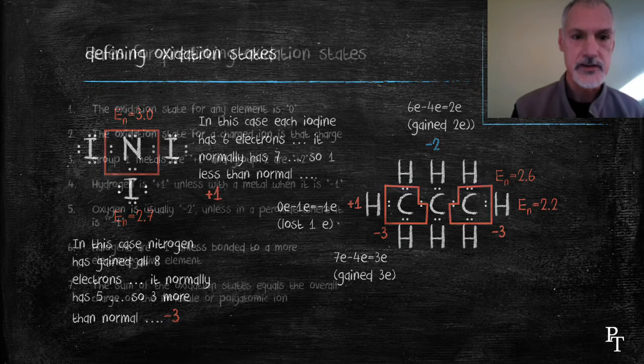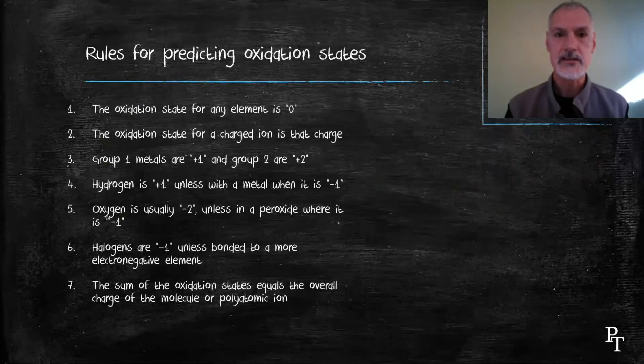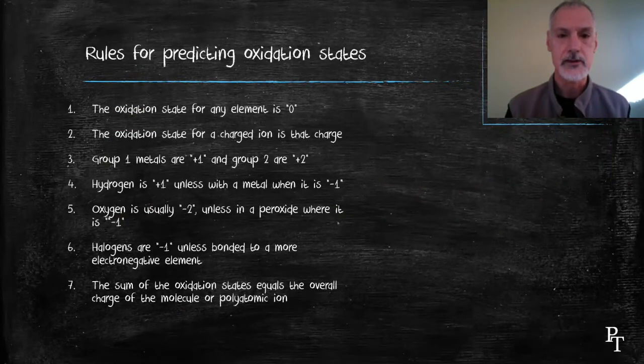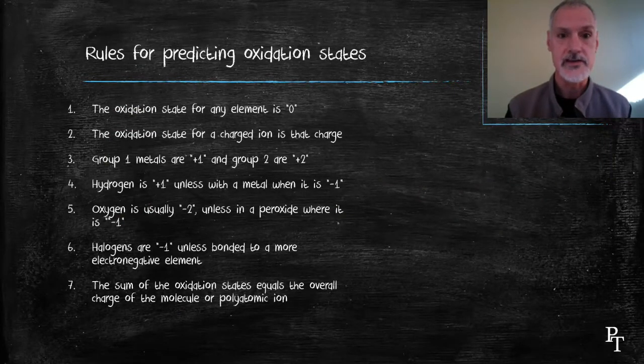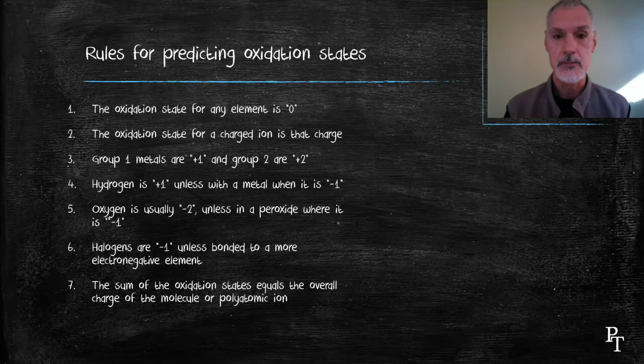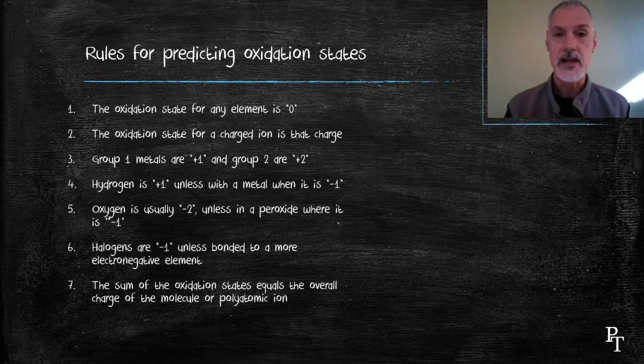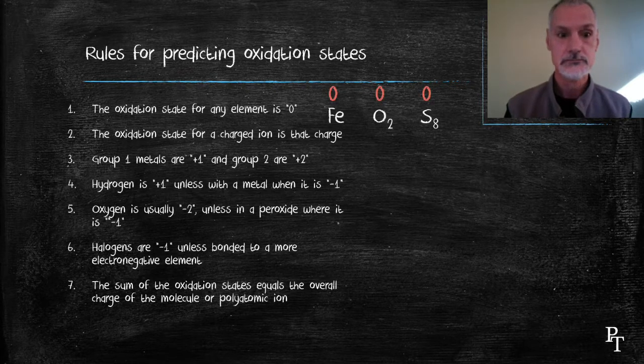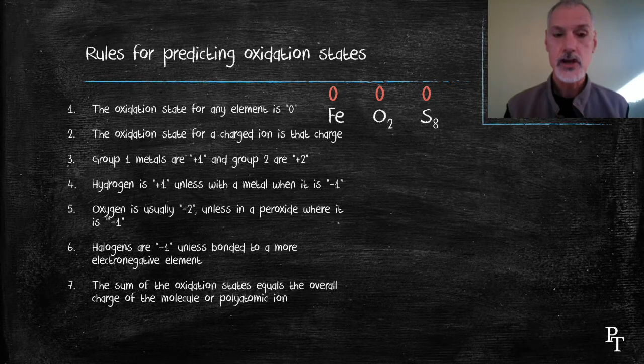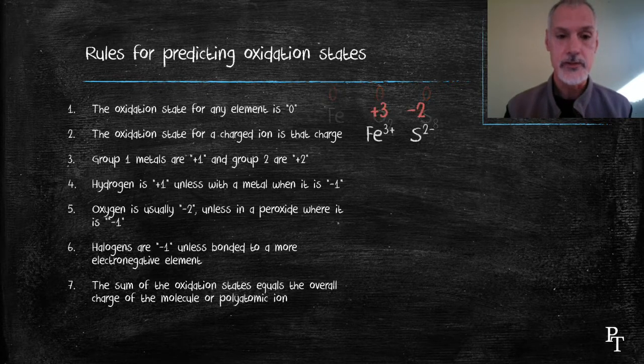Now, rather than drawing these out all the time, it's probably more convenient if we just develop a set of rules that we can apply and save drawing the Lewis dot diagrams all the time. So the first rule is the oxidation state for any element is zero. Secondly, if an element has a charge or a species has a charge, we say it has an oxidation state equal to that charge.